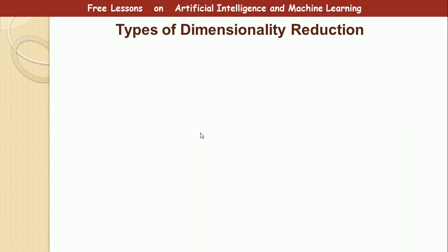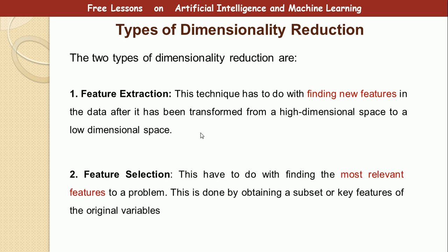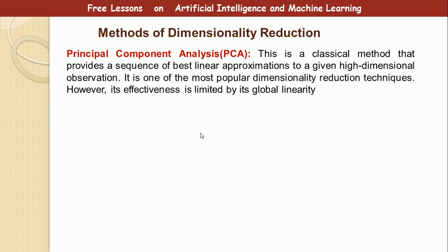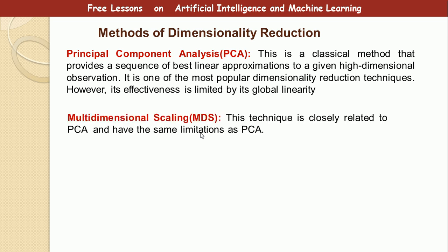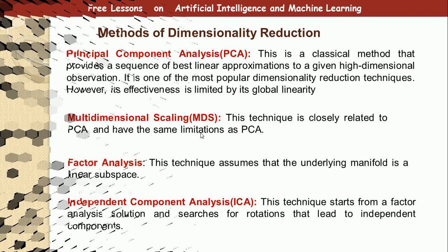Let's now look at two types of dimensionality reduction. The first is feature extraction — finding new features from our dataset. The second is feature selection — extracting the most relevant features of the dataset. Other methods of dimensionality reduction include PCA, multidimensional scaling, factor analysis, and independent component analysis. Pause the video and take a look at them, and maybe pick up a textbook to get a better understanding.